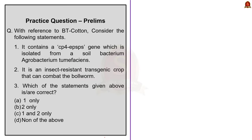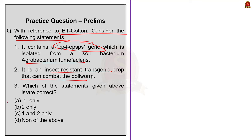With reference to Bt cotton, consider these statements: it contains the CP4 EPSPS gene isolated from the soil bacterium Agrobacterium tumefaciens; it is an insect-resistant transgenic crop that can combat bollworm. The correct answer is option B: two only. Statement one is incorrect because Bt cotton has genes Cry1Ac and Cry2Ab obtained from the soil bacterium Bacillus thuringiensis — the CP4 EPSPS gene is used in HT Bt cotton. Statement two is correct — it is an insect-resistant transgenic crop that can combat bollworm.